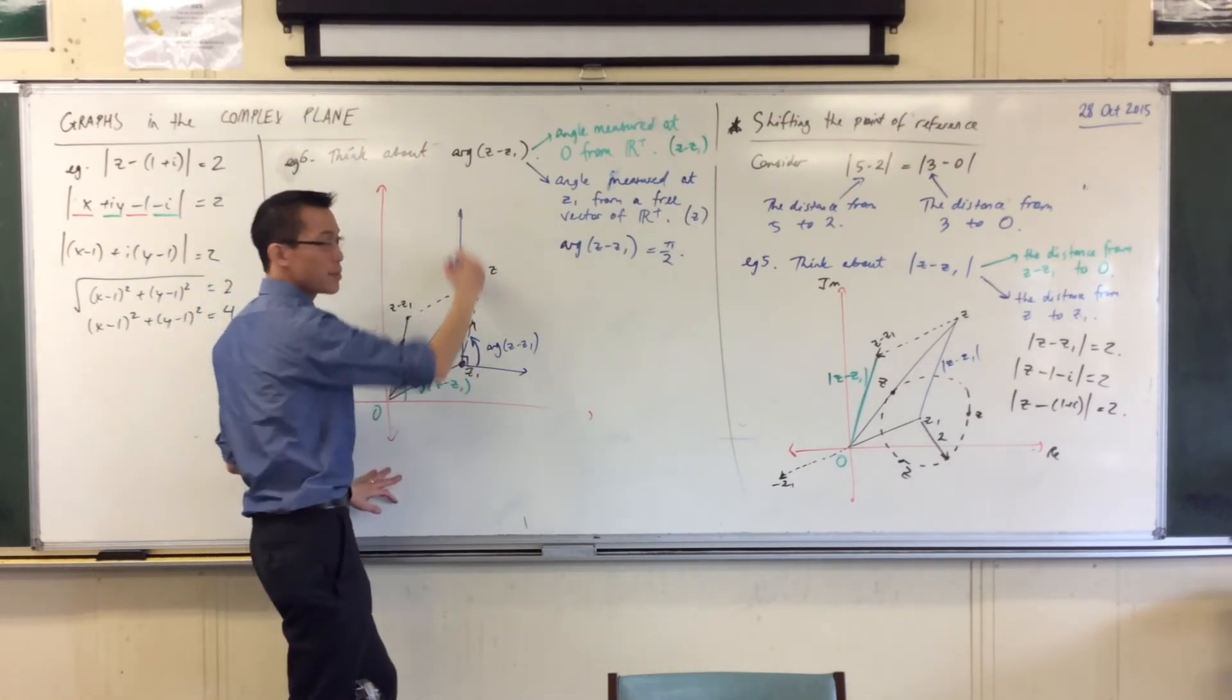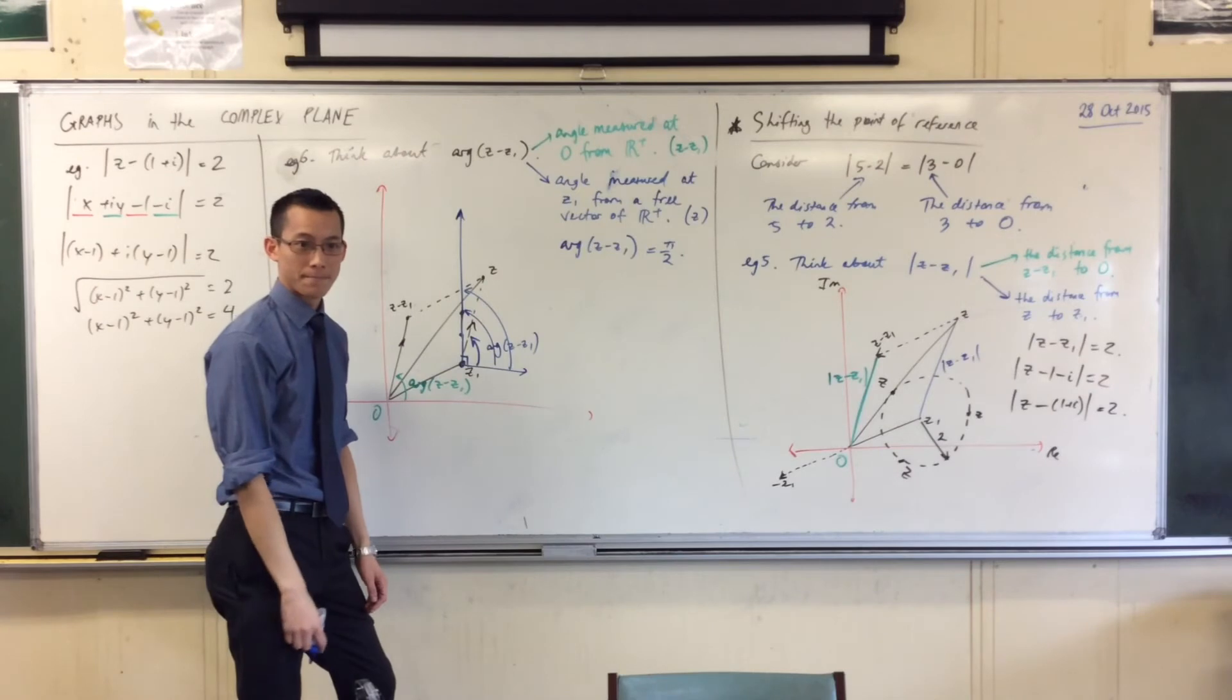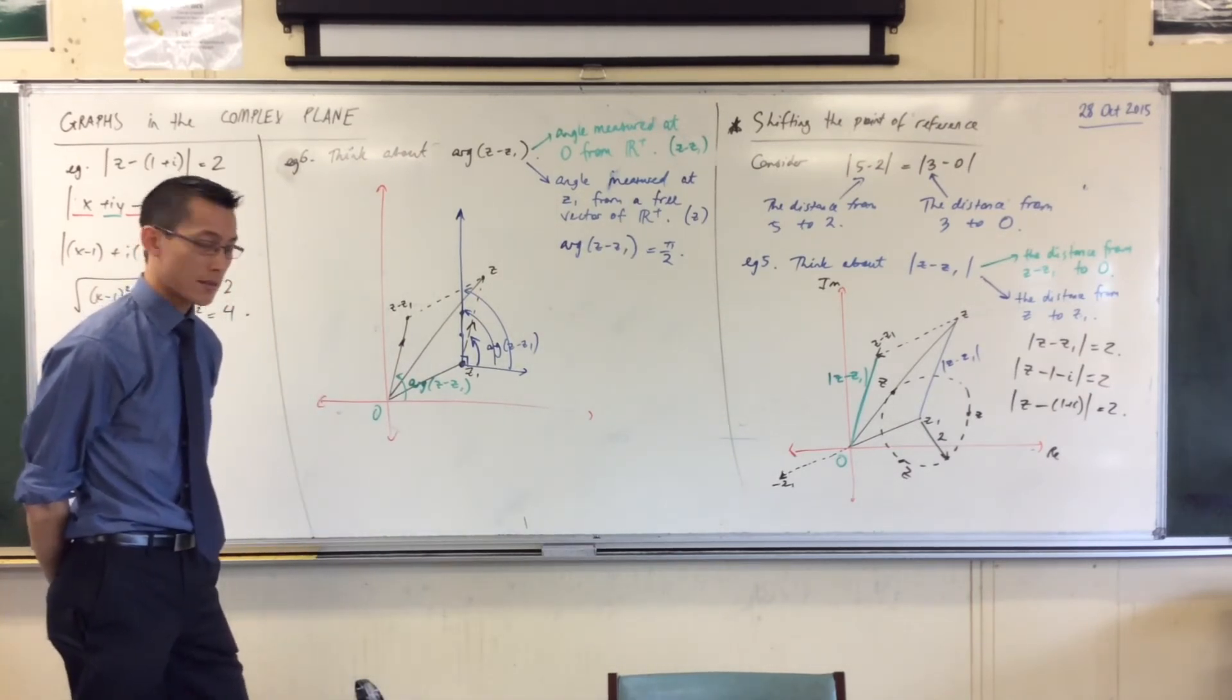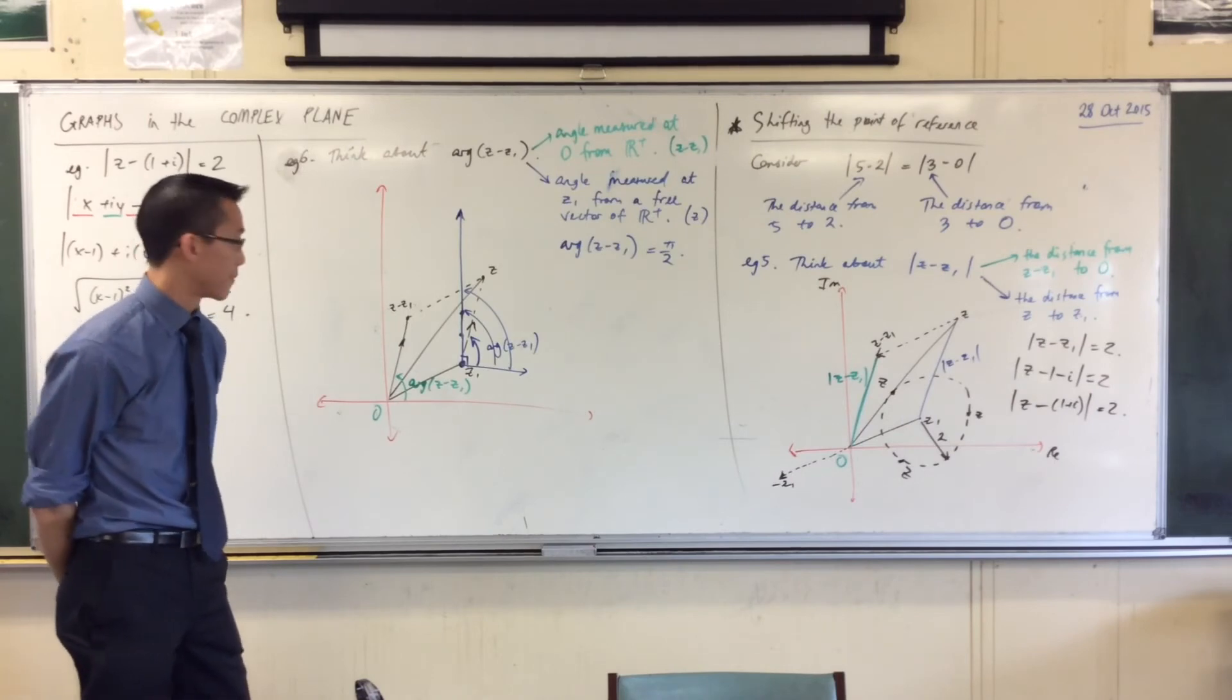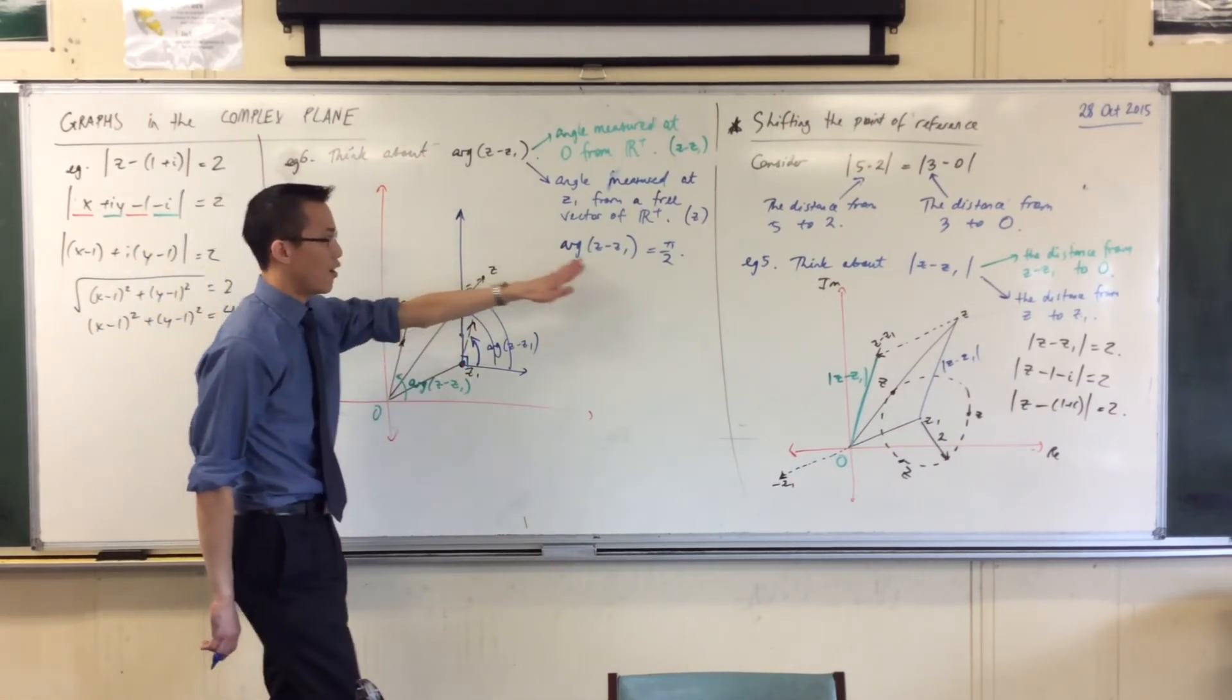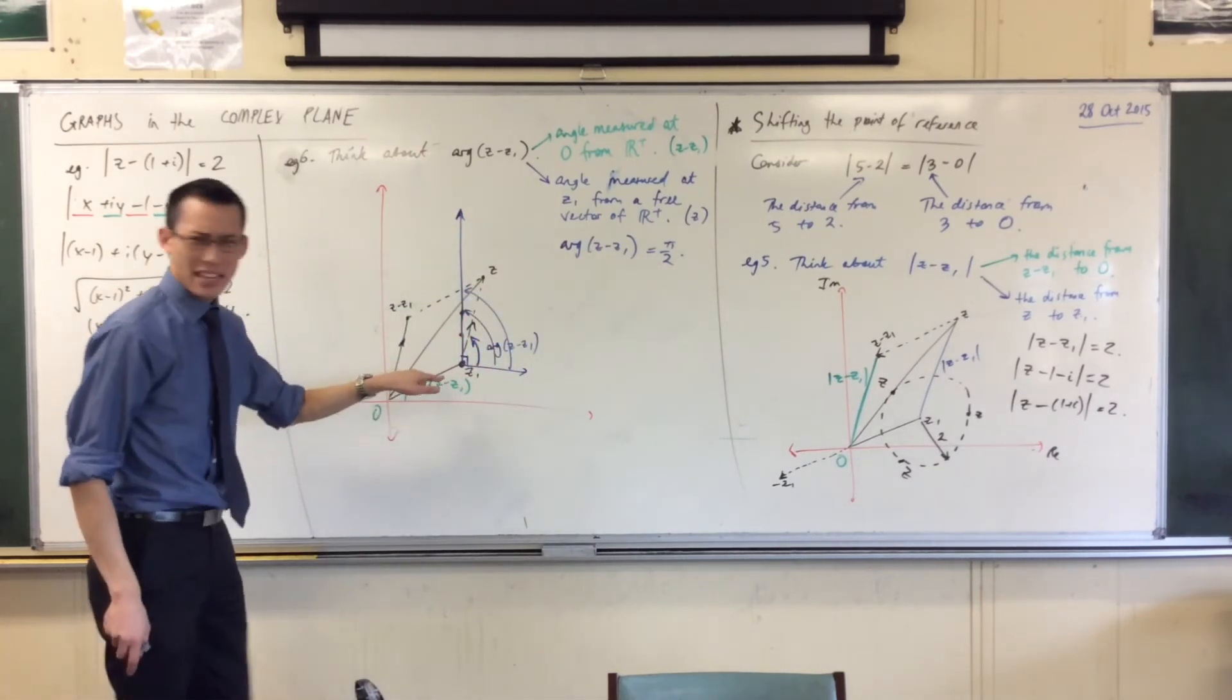So therefore, any of these points up here will measure pi on 2 when I think about their argument. That angle is going to be the whole angle, z1 minus z. Correct. It's exactly correct. So all of these points have an argument of pi on 2 measured from z1. Now, the question becomes, what about z1?